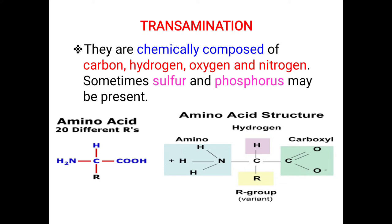The chemical nature of a protein is majorly composed of elements carbon, hydrogen, oxygen, and most importantly nitrogen. Sometimes, in addition to these elements, we may also find sulfur and phosphorus units. The general structural representation of a protein unit is called an amino acid.